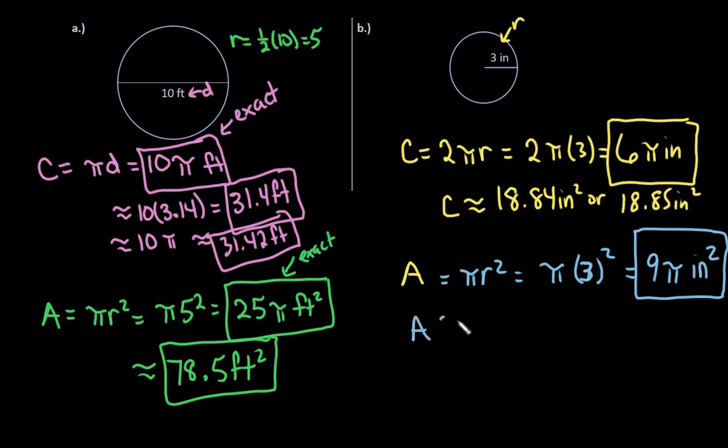And if I plug it into my calculator, it ends up being approximately 28.27 inches squared if I use the pi button. Or if I use the 3.14, I would get approximately 28.26 inches squared.